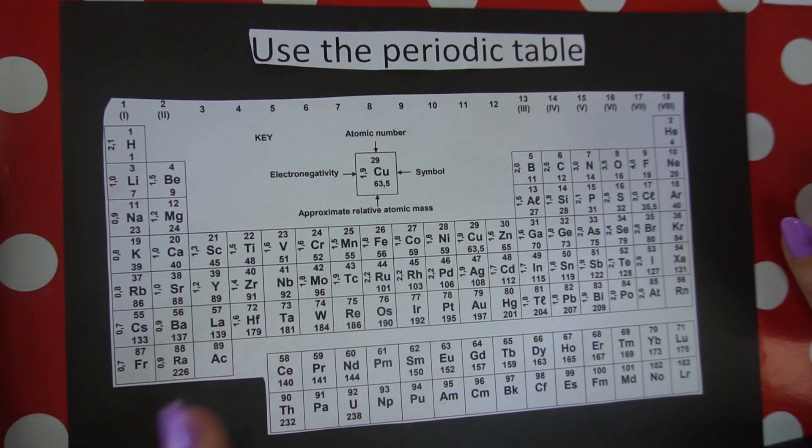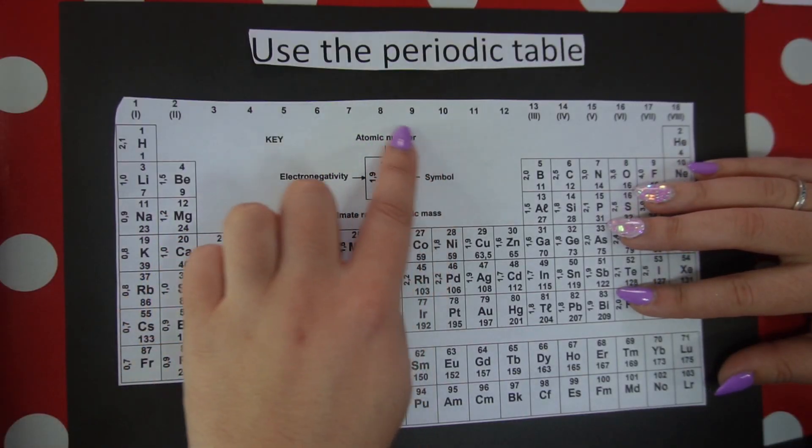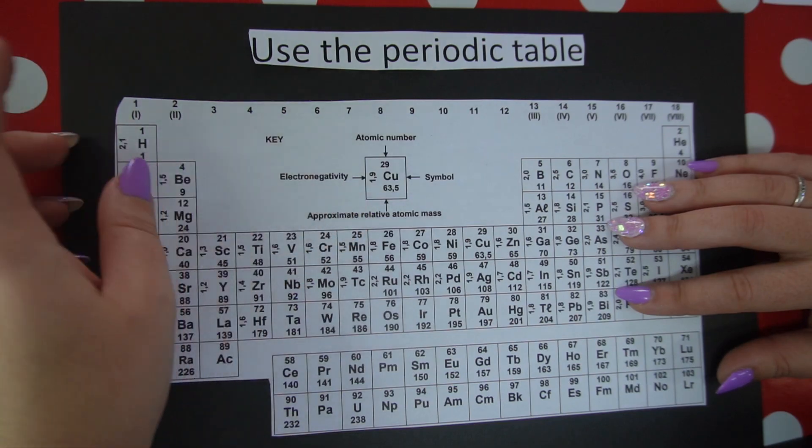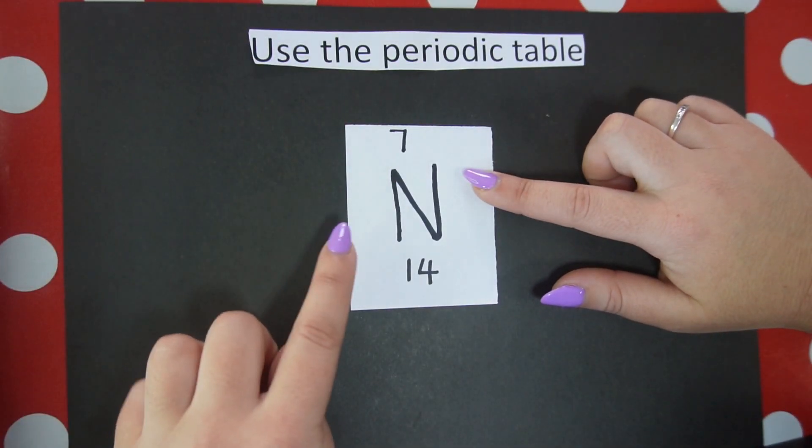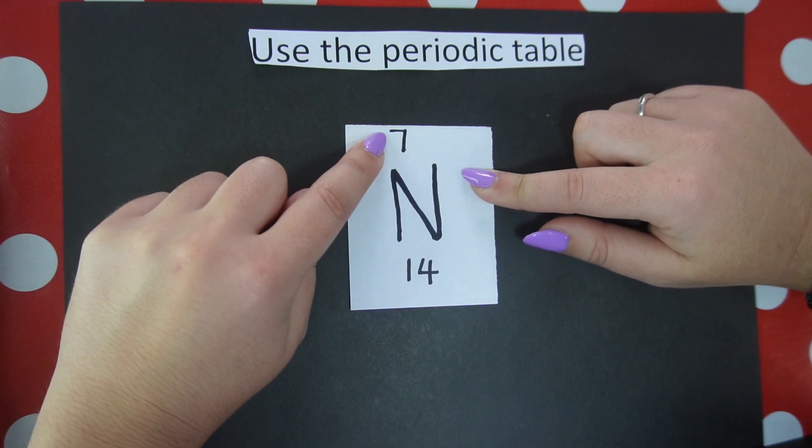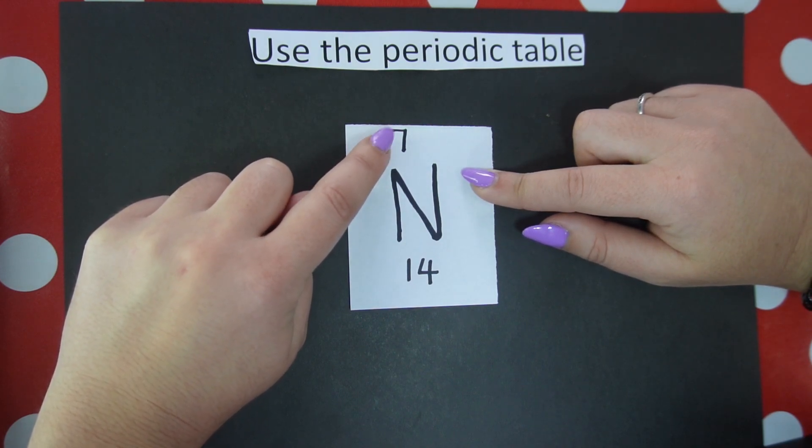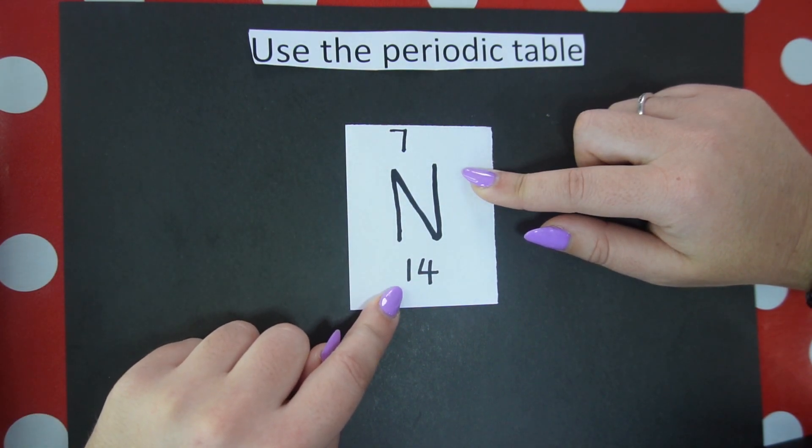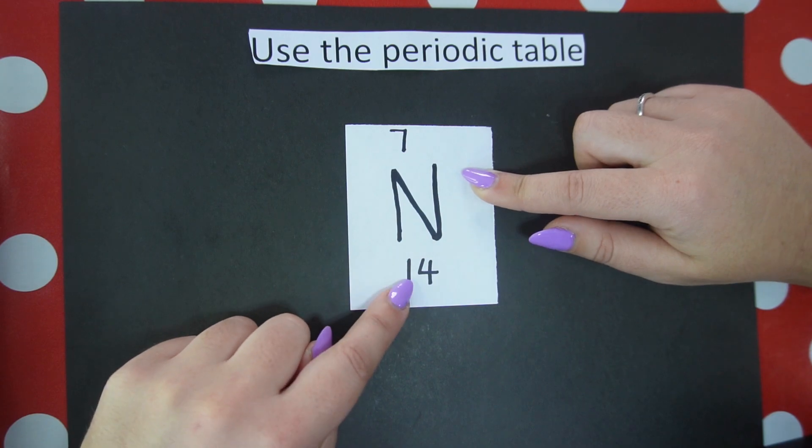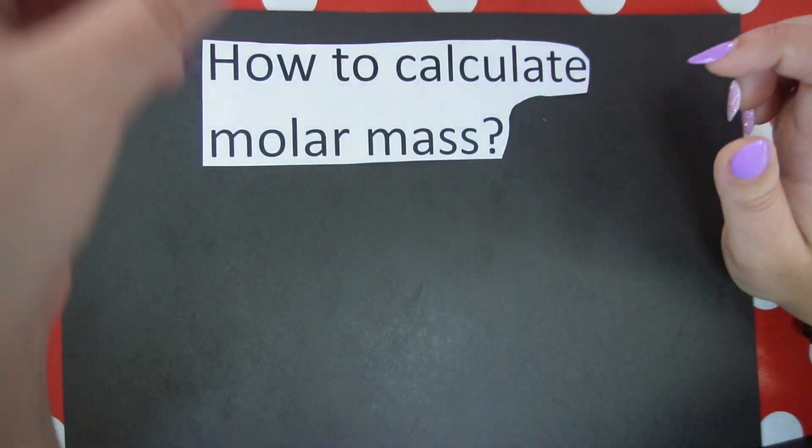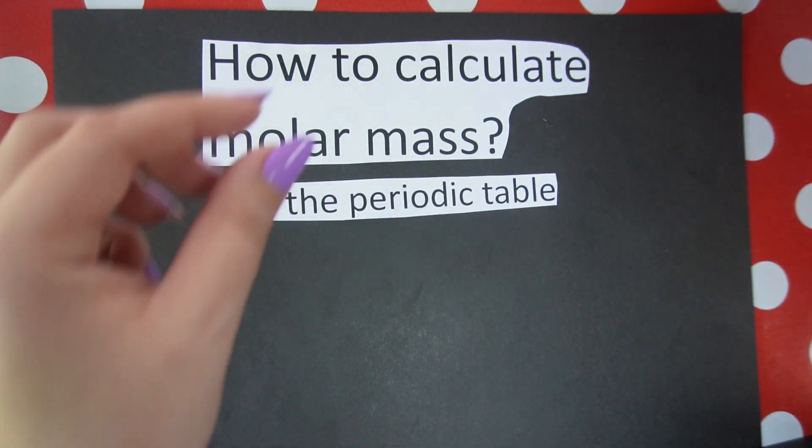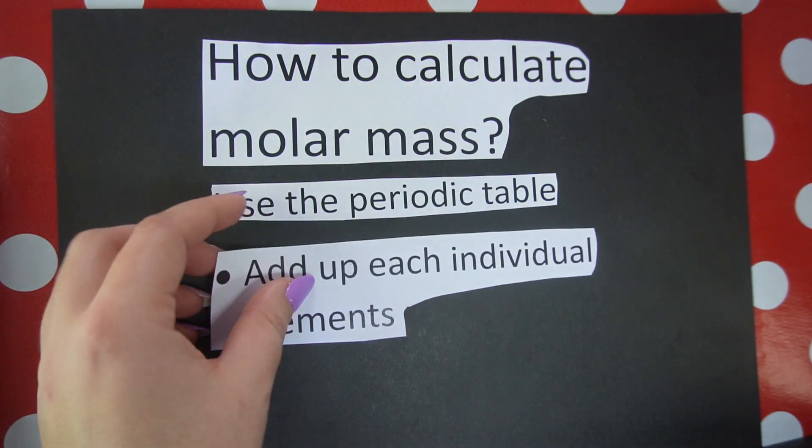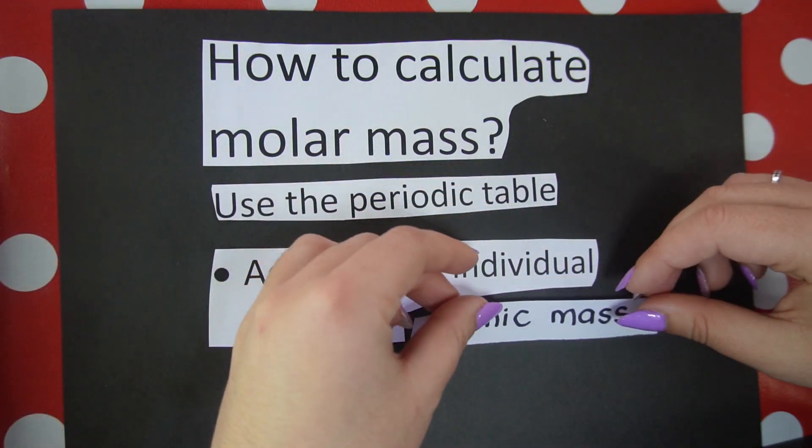These are all the elements and our compounds are made up of individual elements. Each individual element has two numbers associated with it. Each element has a small number which is the atomic number—that is the number of protons within that atom—and the big number which is the atomic mass number. When we calculate molar mass we use the periodic table and we add up each individual element's atomic mass numbers to give us the molar mass of the entire compound.